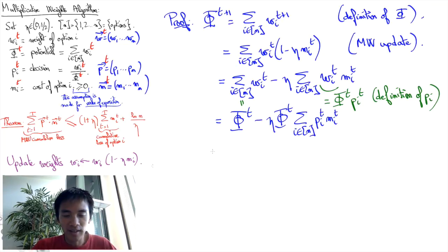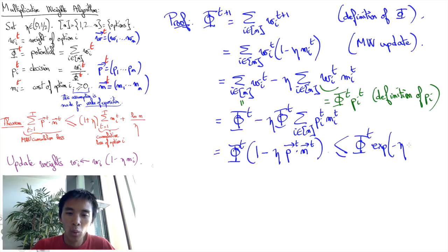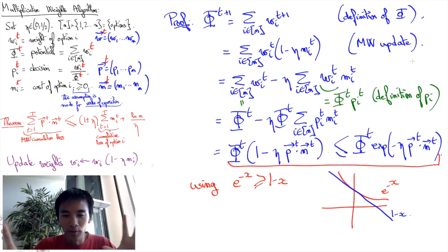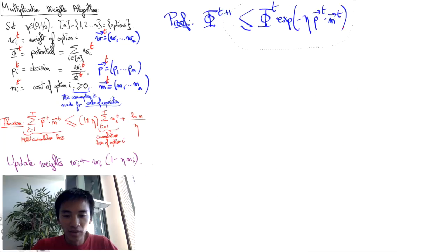So intuitively, what's going on here is that the growth of the potential function will be very similar to the growth of the weights. Now, from here we want to say that the decrease of the potential function will therefore be exponential, and indeed we can use the inequality—you can see this intuitively with this figure, otherwise to make it formal you can use a convexity argument—and using this inequality you can conclude that the potential function will get multiplied by an exponential average cost.